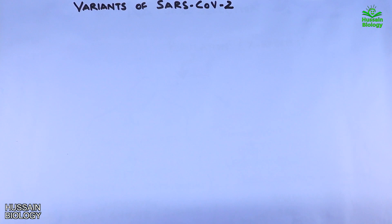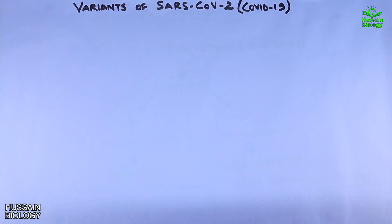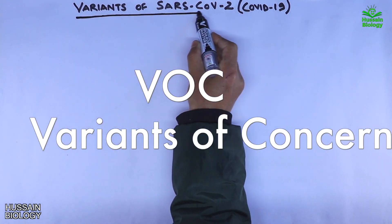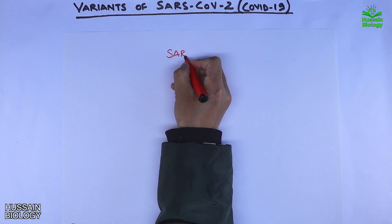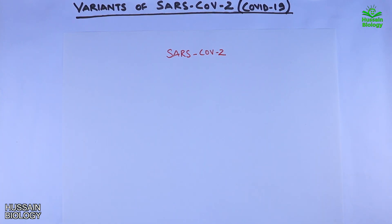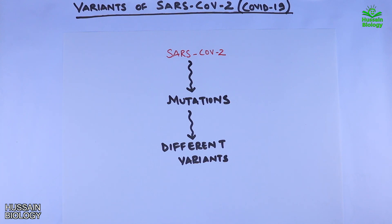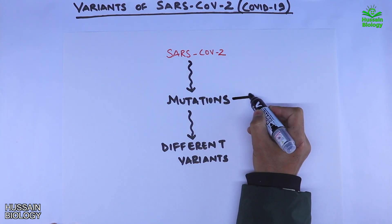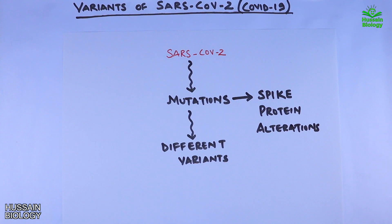In this video we'll be discussing the variants of SARS-CoV-2. We know we had different types of variants globally, but there are some variants of concern which we will be discussing today. The SARS-CoV-2 virus gets mutations, and from these mutations we get different types of variants. Most of the mutations of concern exist in the S gene of SARS-CoV-2, which affects the spike protein.